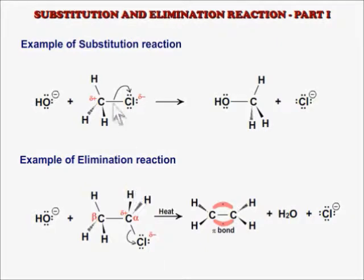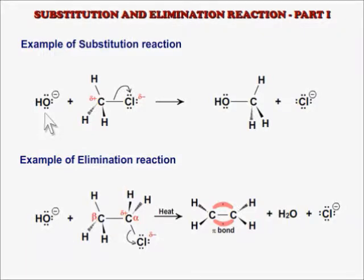The carbon-halogen bond is polar, and due to the difference in electronegativity there is a partial positive charge on the carbon atom, which acts as an electrophile. When a reagent which has the power to give away an electron pair — in other words, a Lewis base — is reacted with the alkyl halide (the substrate), it may attack the partially positive charged carbon of the substrate.